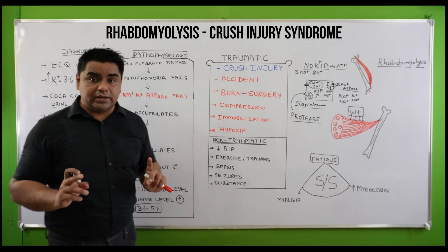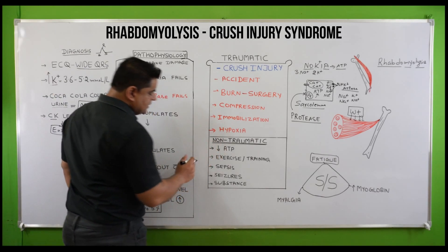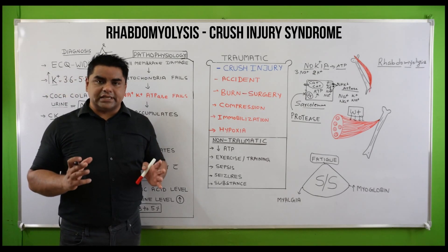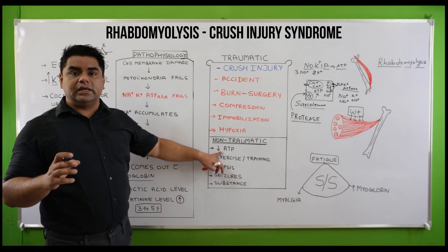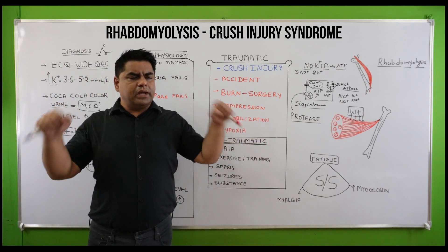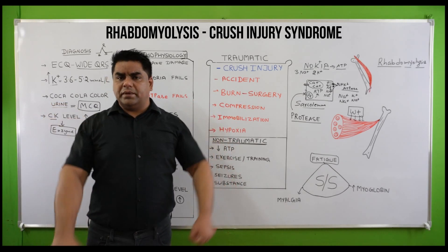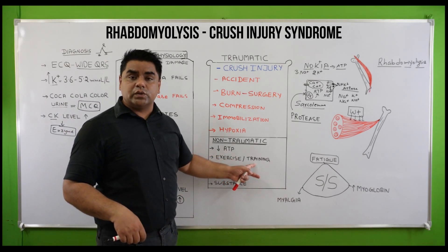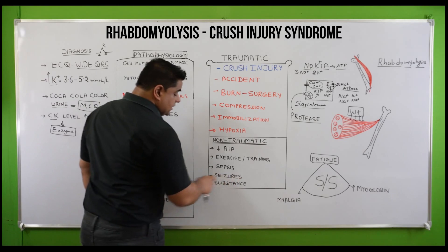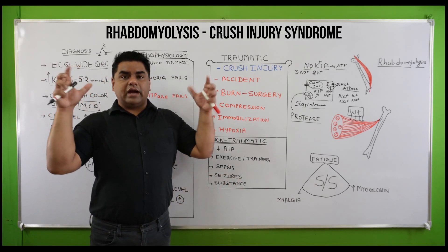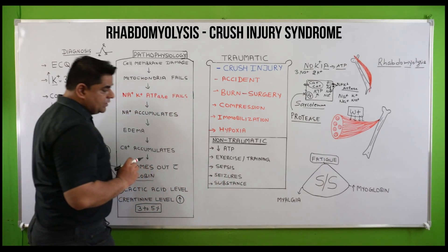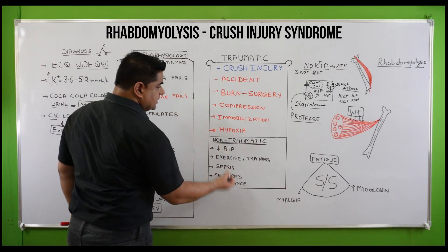Non-traumatic causes include decreased ATP, which causes an energy crisis. In hypoglycemia, there will be decreased ATP. Vigorous exercise — for example, gym training, army soldiers, or marathon students — can also cause this. Sepsis due to bacterial or viral infection, seizures causing vigorous shaking activity of the muscles leading to heavy ATP use, and substance abuse including cocaine are all non-traumatic causes.